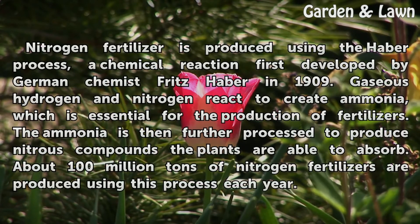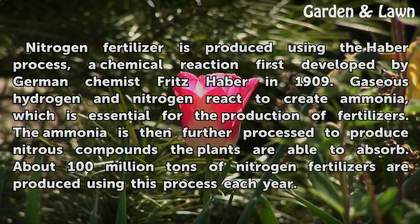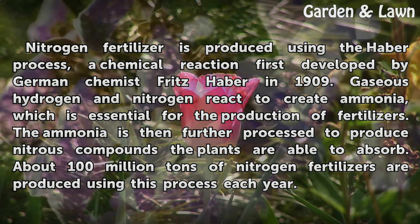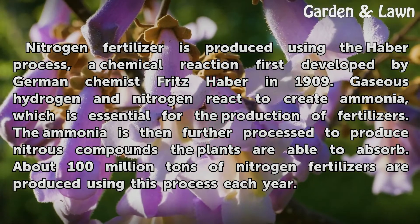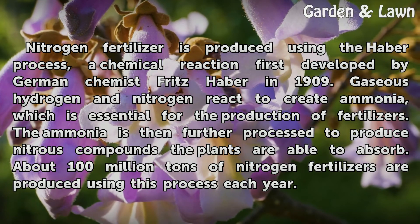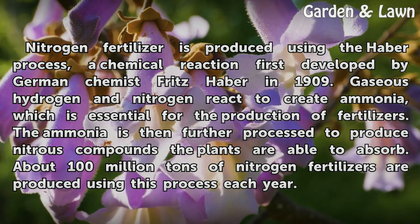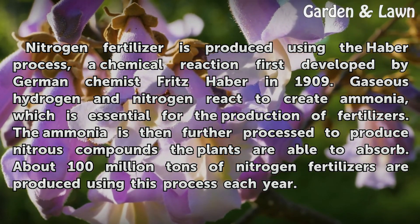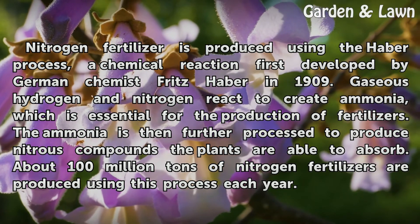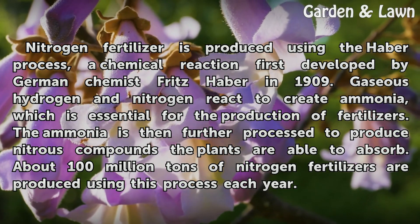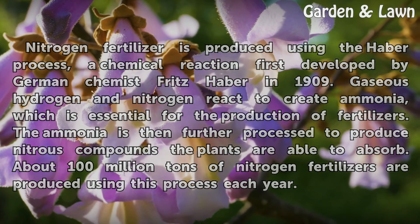Nitrogen fertilizer is produced using the Haber process, a chemical reaction first developed by German chemist Fritz Haber in 1909. Gaseous hydrogen and nitrogen react to create ammonia, which is essential for the production of fertilizers. The ammonia is then further processed to produce nitrous compounds the plants are able to absorb. About 100 million tons of nitrogen fertilizers are produced using this process each year.